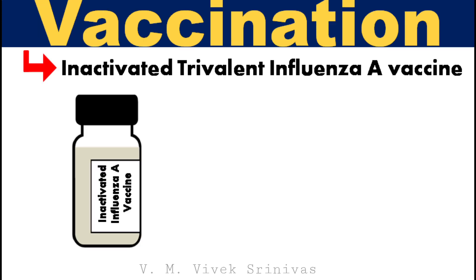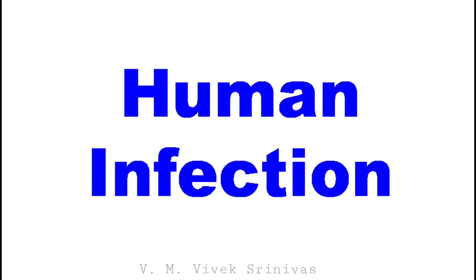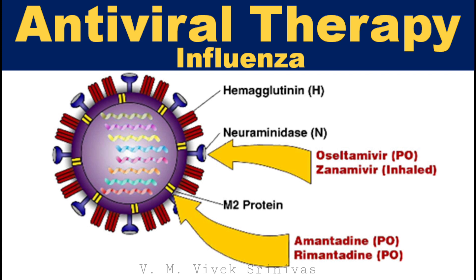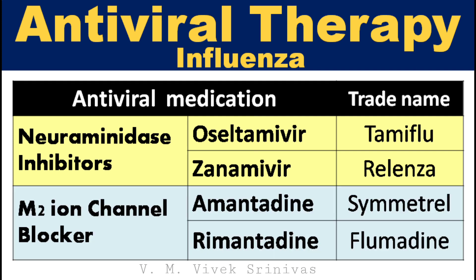Vaccination: Inactivated trivalent influenza vaccines are available containing three inactivated vaccine viruses for strains H1N1, H1N2, and H3N2. This inactivated vaccine is adjuvanted by emulsifying in mineral oil. This disease can cause infection in humans. Antiviral drugs are available against this virus by targeting the neuraminidase protein and the M2 ion channel proteins. Drugs like oseltamivir and zanamivir are used as neuraminidase inhibitors, and amantadine and rimantadine are used as M2 ion channel blockers. Antiviral drugs, if taken within two days of symptoms, may help.